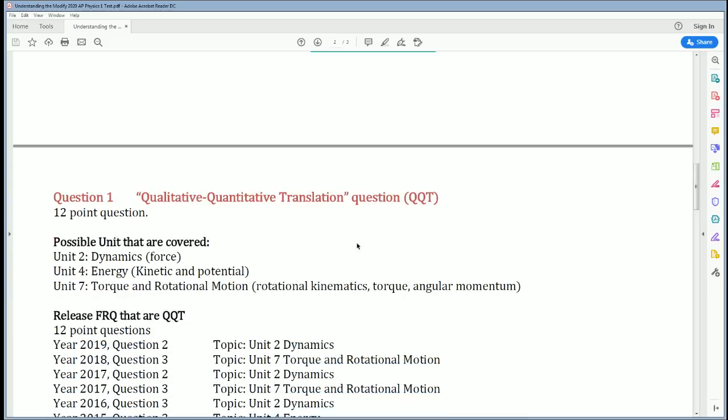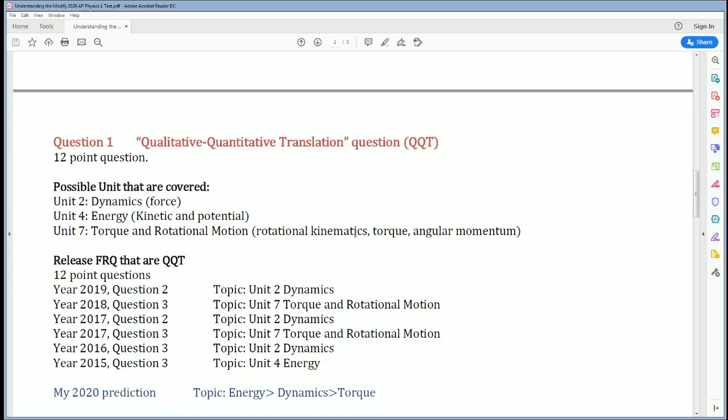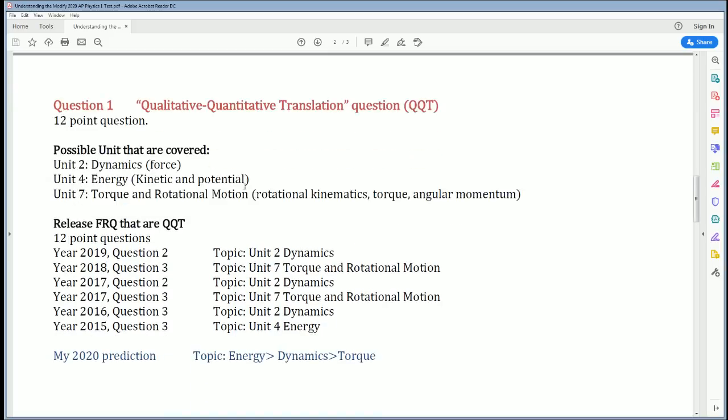What are the questions that are actually on the test? Question types are very specific. Question 1 is called a QQT and it's worth 12 points—a quantitative qualitative translation. The possible units that this question can be based on are only three. Unit 2: dynamics, which is forces. Unit 4: energy, both kinetic and potential. Unit 7: torque and rotational motion, including rotation kinematics, torques, and angular momentum.